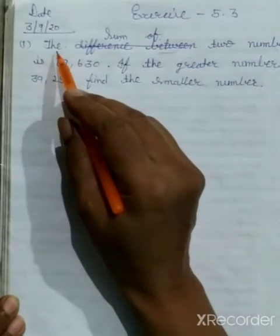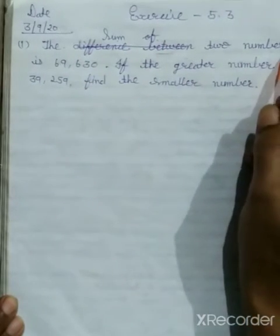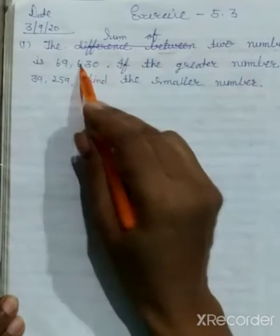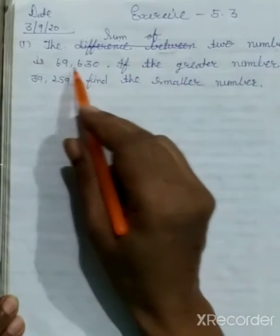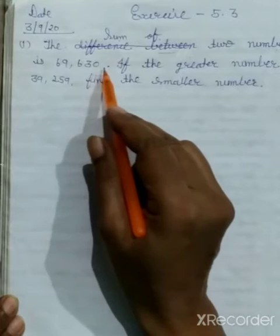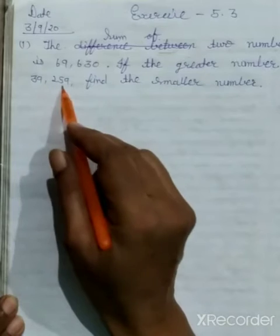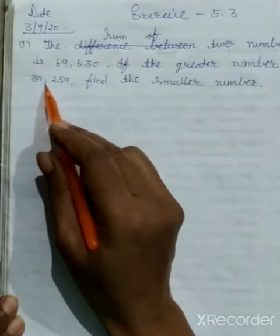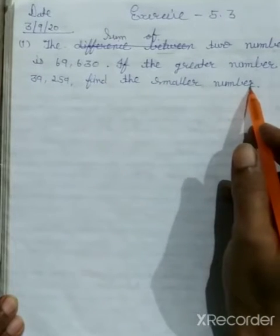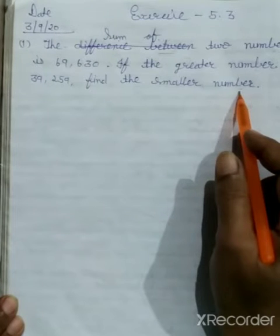Now see, read it again, the sum of two numbers is 69,630. This means what? That the sum of two numbers added together equals 69,630. If the greater number is 39,259, find the smaller number. We need to find the smaller number.